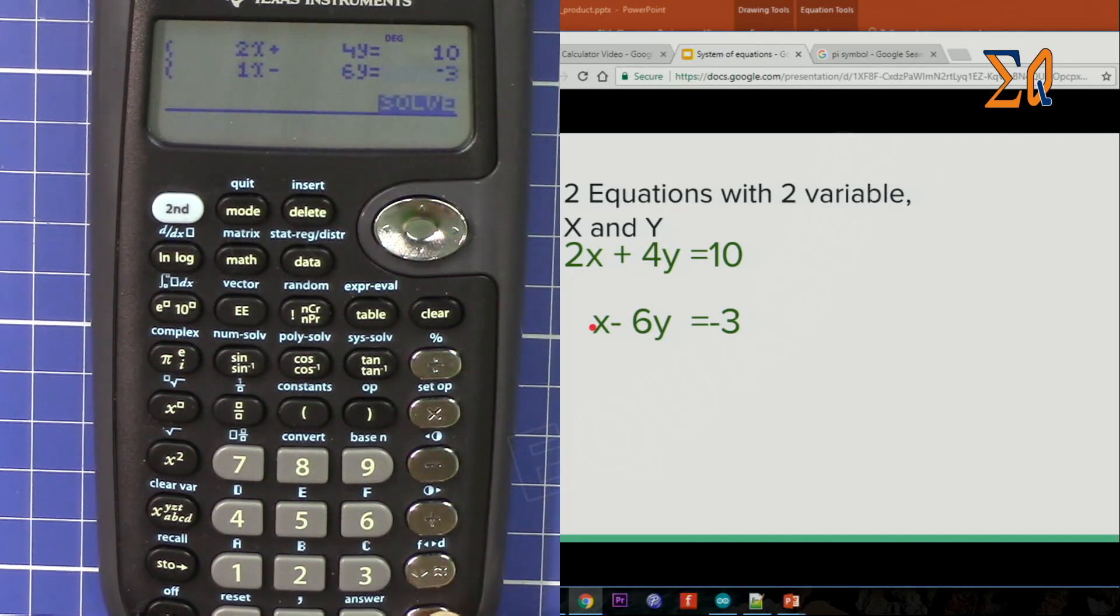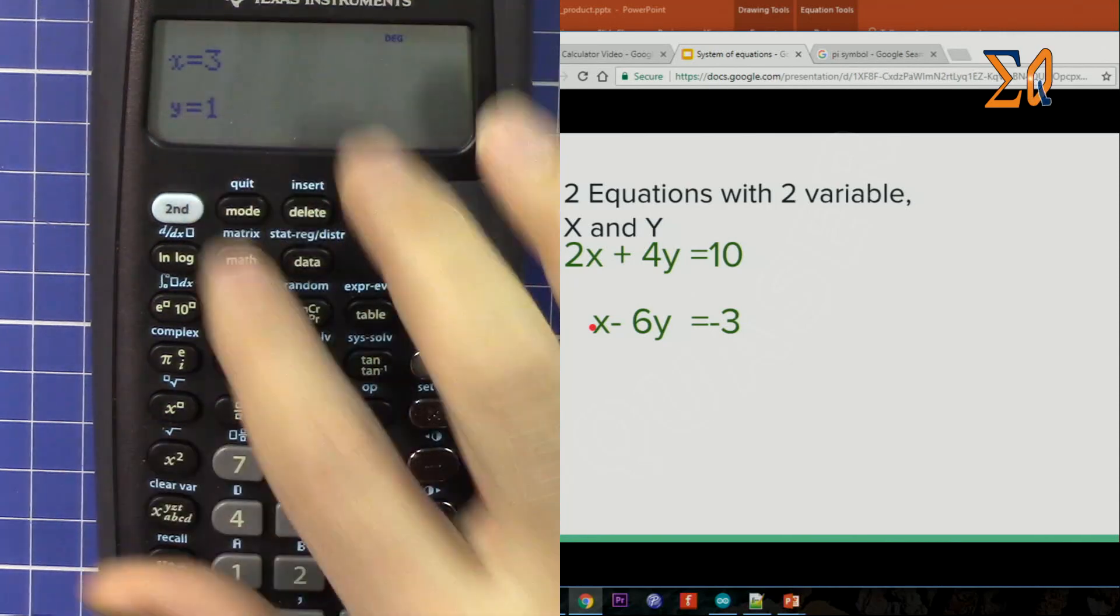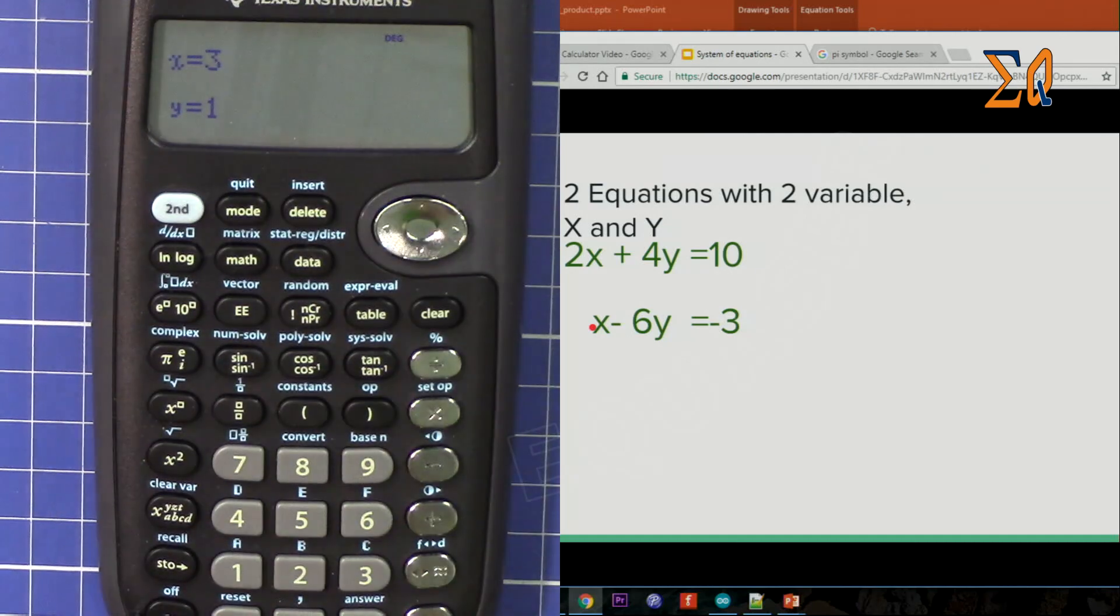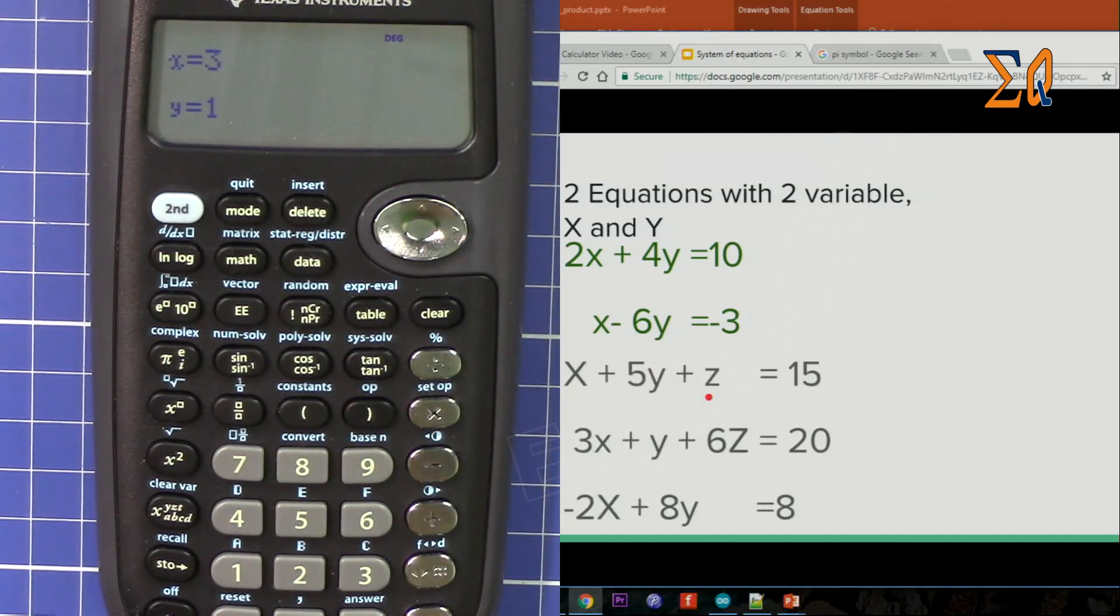So minus 3. Now we see minus 3. The cursor is ready here to solve. So x is -1 and then y is 1.